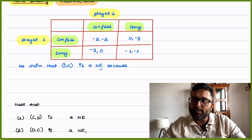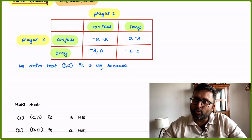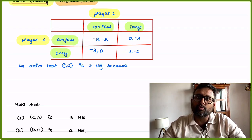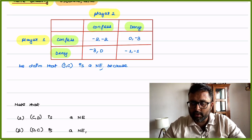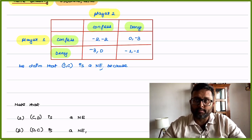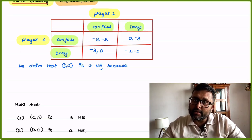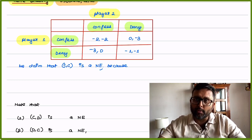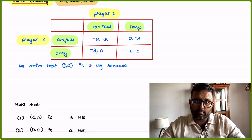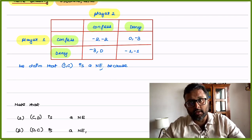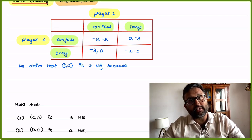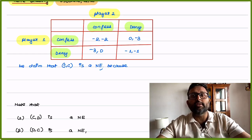If both of us confess — I'm player 1 and you are player 2 — if both of us confess that we have done the crime, police is going to put us for 2 years in jail. If I confess but you deny, then since I am acting as an informant to the police, police is going to set me free. But since you are denying, you will be put for 3 years in jail.